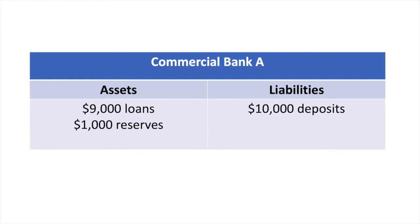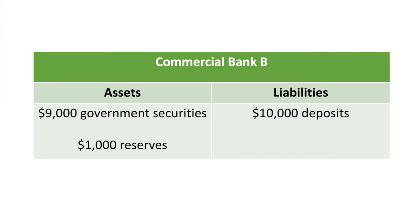Let's compare this to what happens when a commercial bank makes a loan to the government. Commercial bank B makes a loan to the government of $9,000, and the government issues the bank a short-term security. If the bank is maintaining a 10% liquidity ratio then it cannot loan the $1,000 in reserves. However, due to the fact that they have a security with a value of $9,000, the bank can continue to make loans of up to $9,000. So now the bank has a loan out to the government for which it will receive interest, and can continue to make additional loans up to the value of the government's security.